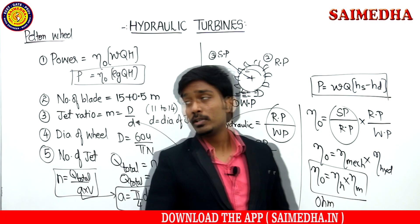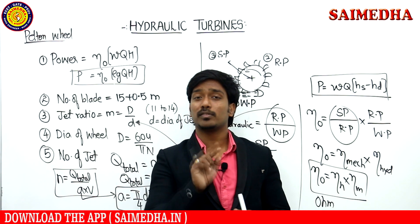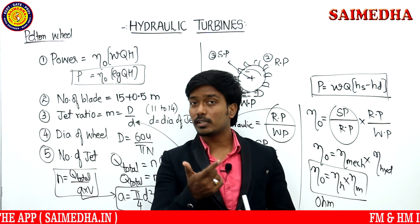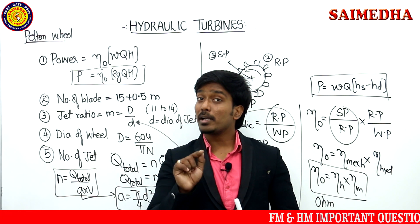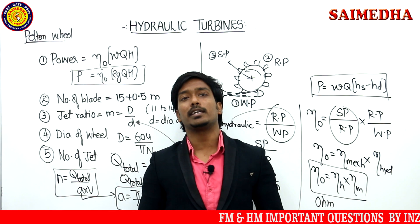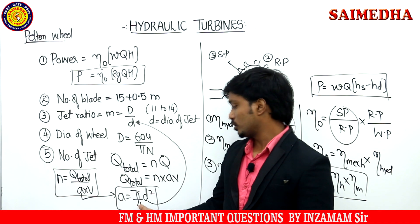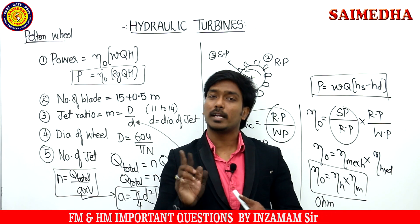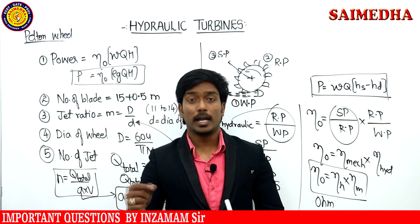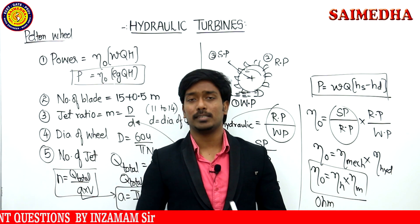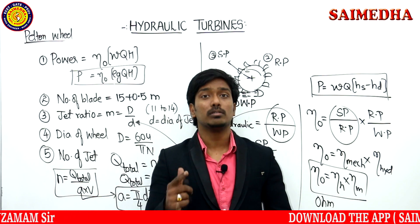Let's recap the formulas. First: Power = overall efficiency × ρ × g × Q × H. Second: Number of blades Z = 15 + 0.5 × M — this is an empirical formula. Jet ratio M = capital D / small d, value around 11 to 14. Capital D = 60U / πN. Small d = diameter of the jet. Area of jet = π/4 × d². Number of jets n = Q_total / (A × V). Three efficiencies: hydraulic, mechanical, and overall efficiency.